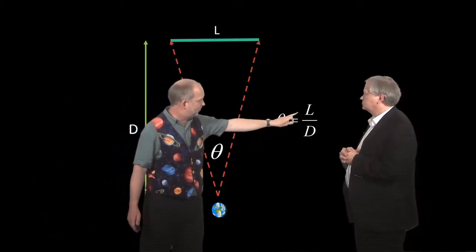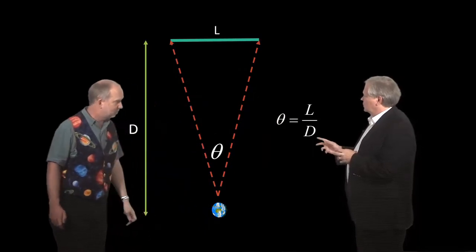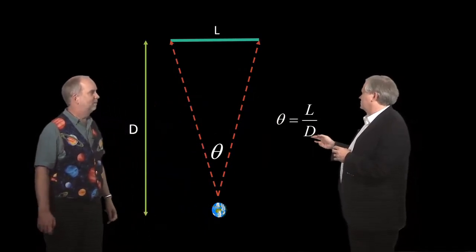Which is just going to be an angle in radians equals the length divided by the distance to it. Well, that distance has to be a bit of a special distance, right, Paul?